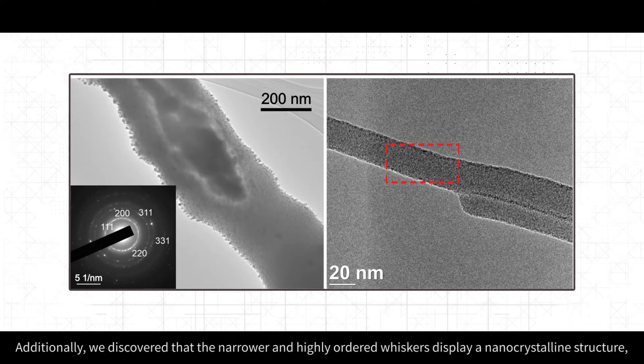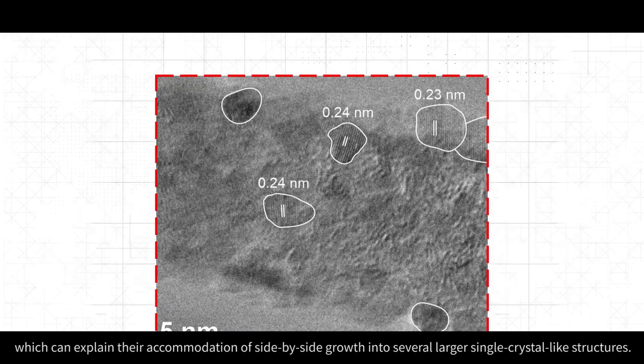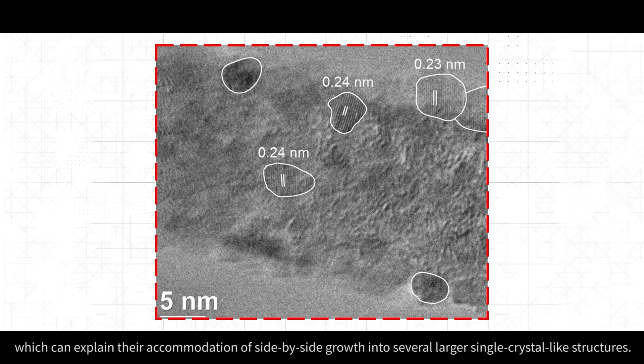Additionally, we discovered that the narrower and highly ordered whiskers display a nanocrystalline structure, which can explain their accommodation of side-by-side growth into several larger single-crystal-like structures.